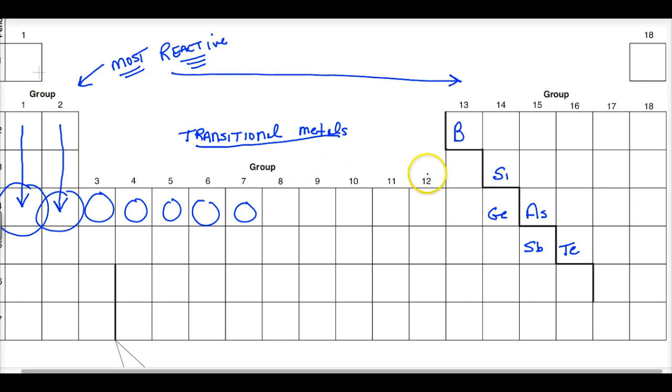People debate whether groups 3 and 12 are transitional, but generally speaking this middle group. To be a transitional metal, you should have an unfilled d-block of electrons. Scandium loses all three, but generally for this chemistry course, this middle block contains the transitional metals.